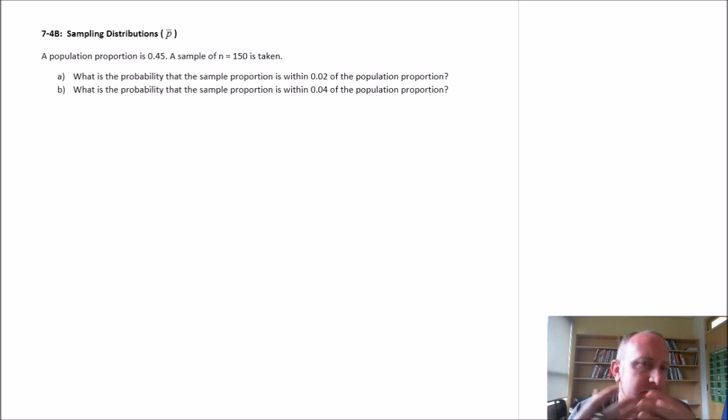Here we've got a generic population proportion of 0.45 and a sample of 150 is taken, and we're going to calculate probabilities that our sample proportion is either within 0.02 of the population or 0.04 of the population proportion. We're just going to get straight into some of the calculations here.